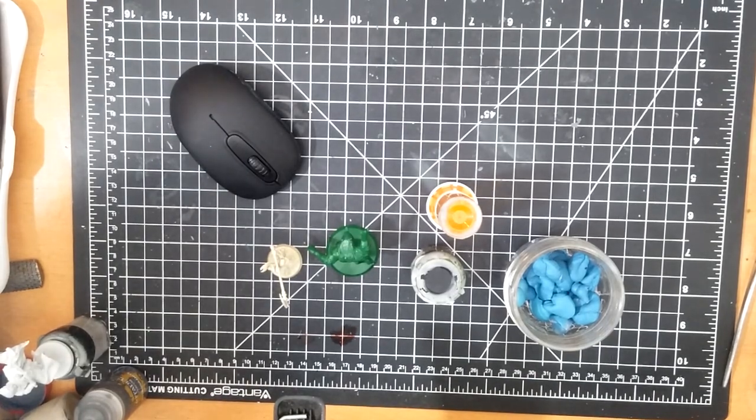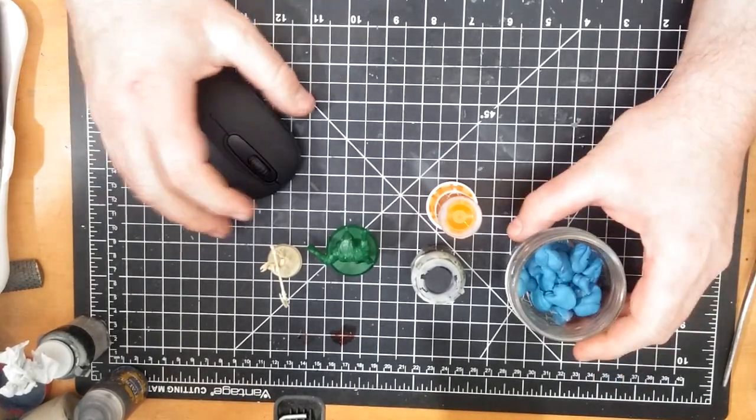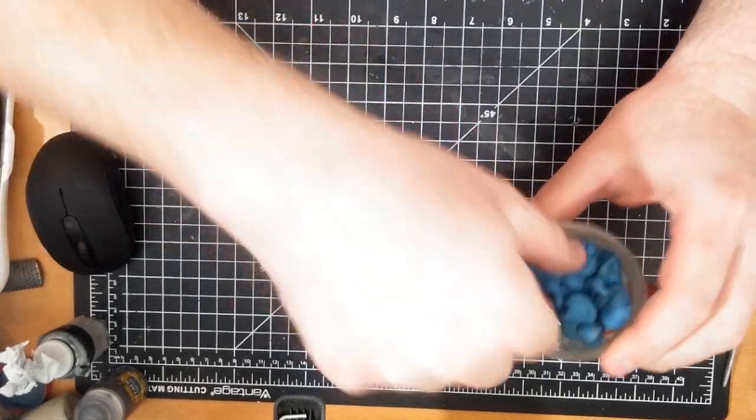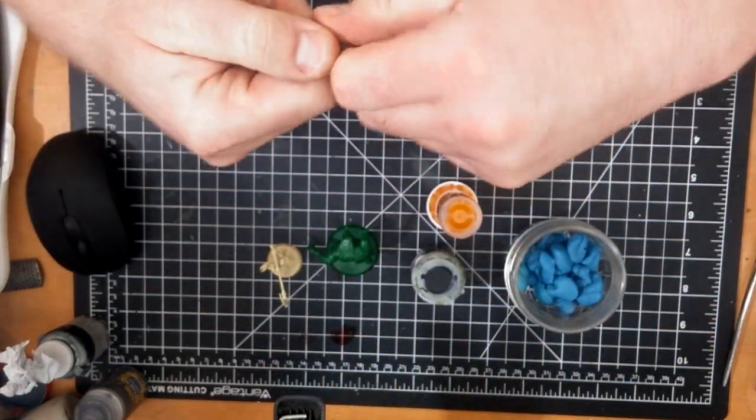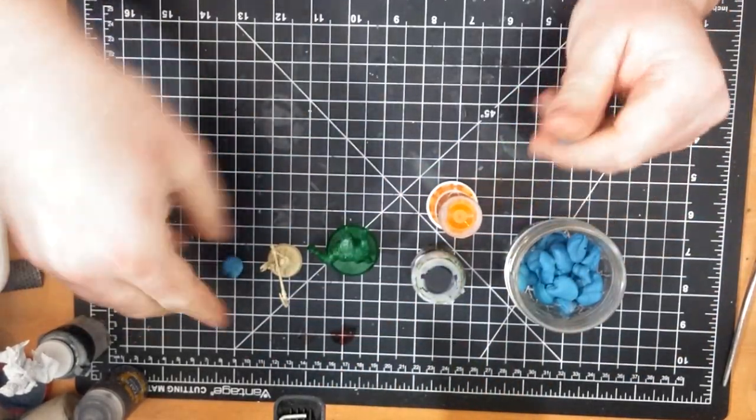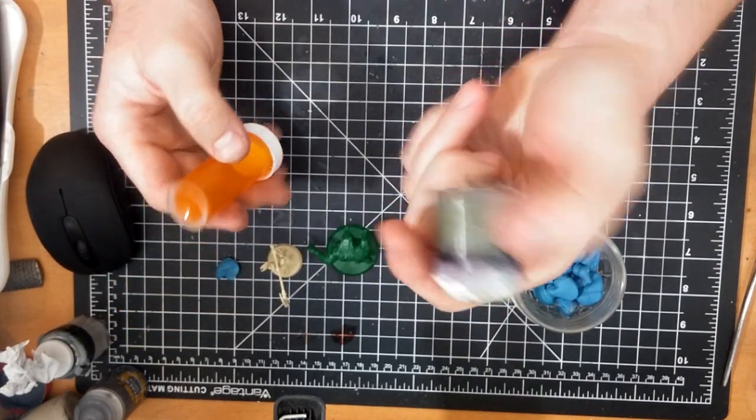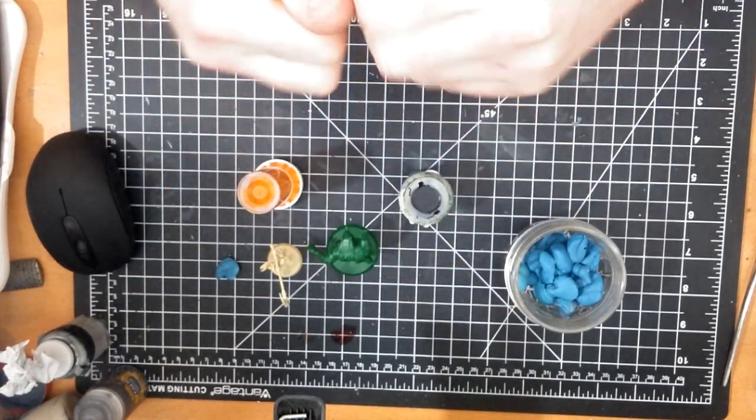Hello everyone. I'm going to show you how to use blue tack to fix models to things like pill bottles, old paint pots, or whatever you have lying around that you want to stick them onto.